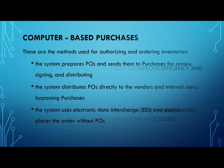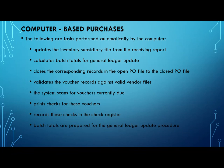The following methods are used for authorizing and ordering inventories: the system prepares POs and sends them to purchasing for review, signing, and distributing; the system distributes POs directly to vendors and internal users, bypassing purchasing; or the system uses electronic data interchange (EDI) and electronically places the order without POs. Other tasks performed automatically by the computer include: updating the inventory subsidiary file from the receiving report, calculating batch totals for general ledger update, closing records in the open PO file to the closed PO file, validating voucher records against valid vendor files, scanning for vouchers currently due, printing checks for these vouchers, recording checks in the check register, and preparing batch totals for the general ledger update procedure.